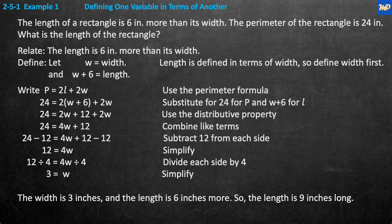Now we're going to write the perimeter formula. The perimeter formula is length plus length plus width plus width, or 2l plus 2w, or 2 times the quantity l plus w. The perimeter P is equal to 2 times l plus 2 times w. We substitute the perimeter as 24, and w plus 6 is substituted for l.